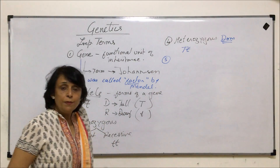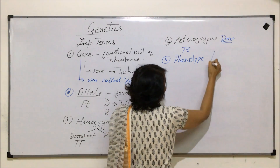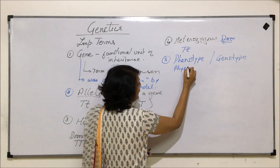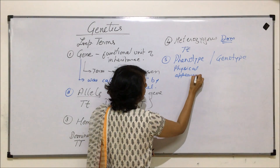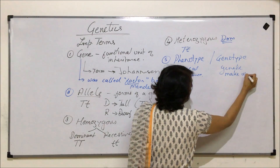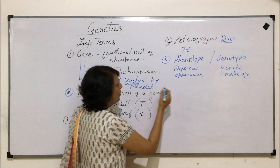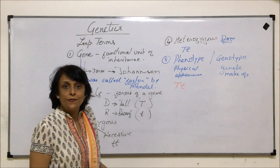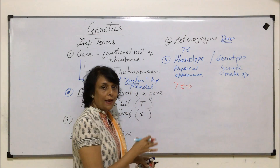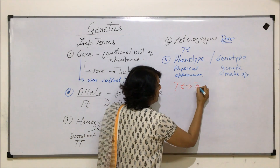Another important term is phenotype and genotype. Phenotype is physical appearance, and genotype is genetic makeup. For example, if we write capital T and small t, we are talking of a heterozygous condition. What would be the height of the plant? Since there is this tall gene, the plant is going to be tall.